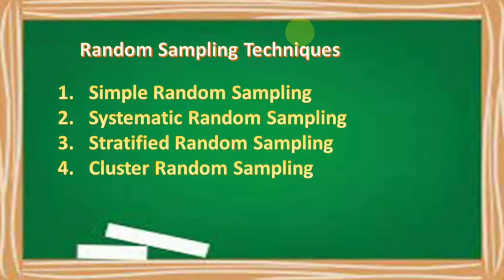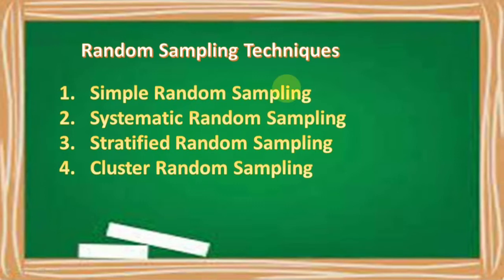We have four types of random sampling techniques and these are the simple random sampling, systematic random sampling, stratified random sampling and the cluster random sampling. And let us discuss each type of random sampling techniques.